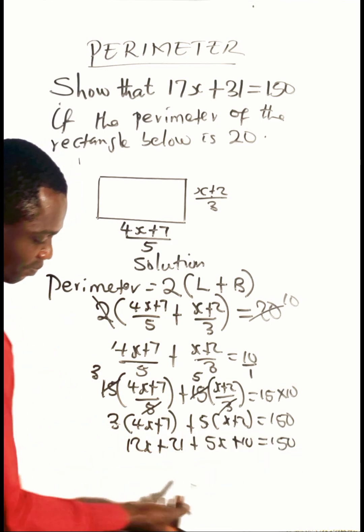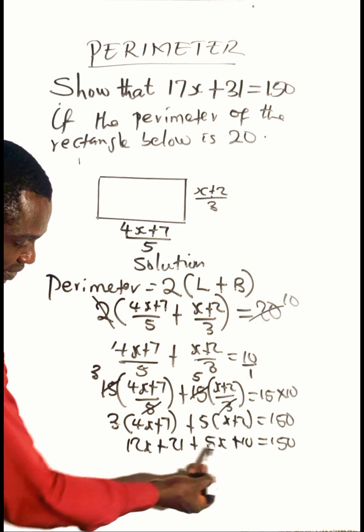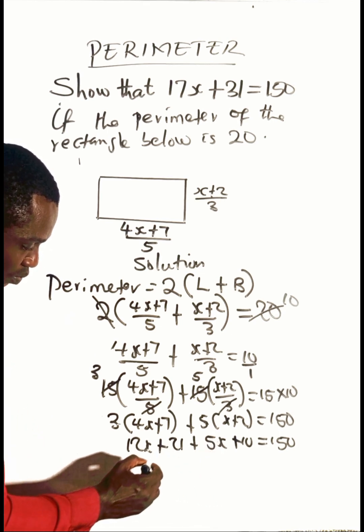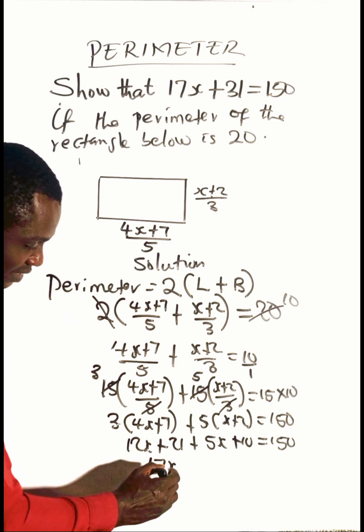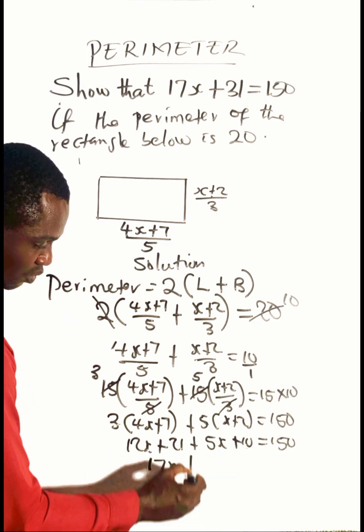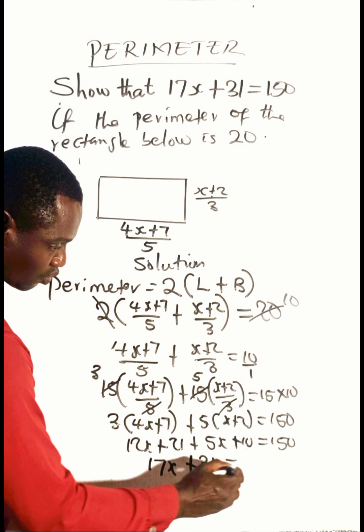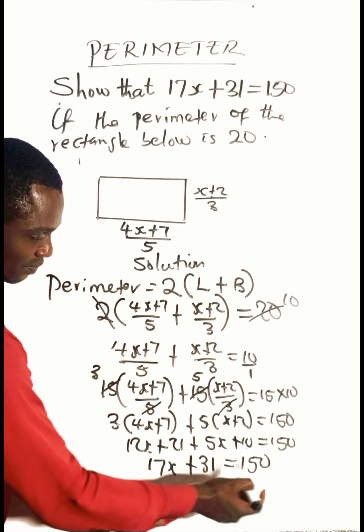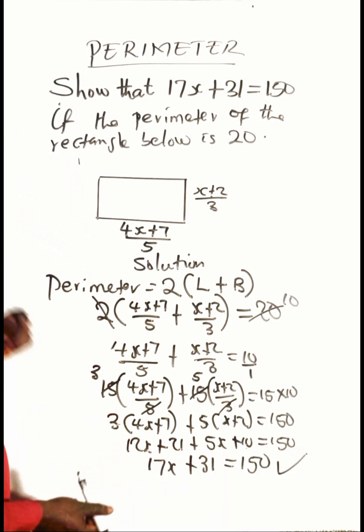Everything here equals 150. If we add like terms together, 12x plus 5x will be 17x, then add the constants together, 21 plus 10 will be 31. Of course, we have proven that 17x plus 31 is equal to 150.